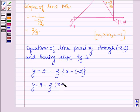Or it can further be written as 9y - 81 is equal to 2x + 4.